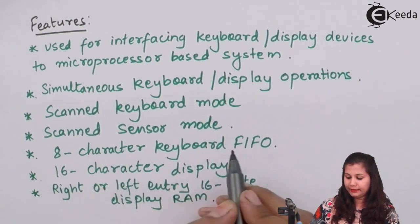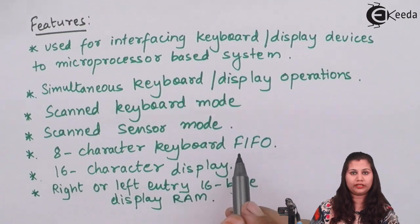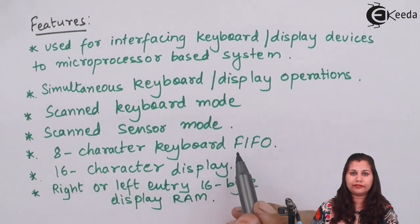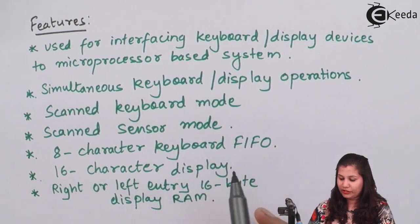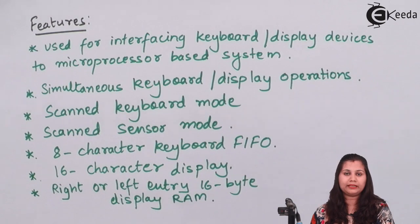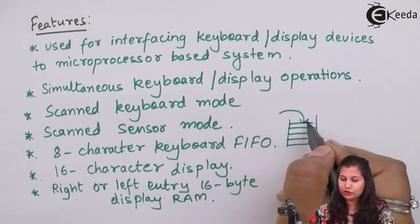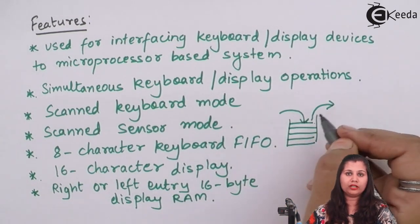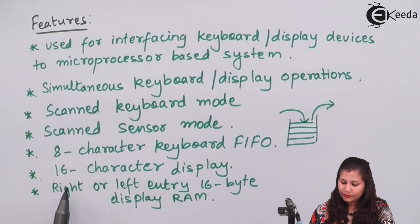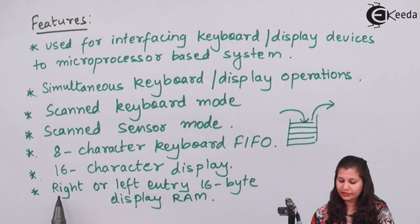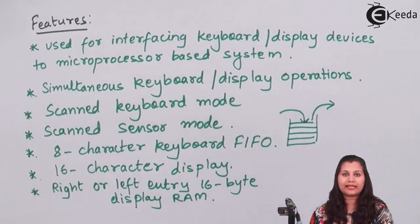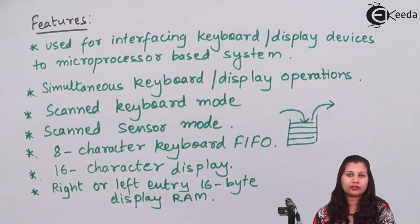In the 8-character keyboard FIFO, the character is stored as First In First Out — the first character put into memory will be the first to come out. In the 16-character display RAM, this RAM follows right or left entry, meaning characters can be entered from either the right-hand side or the left-hand side. This will be understood better when we study the modes of the 8279.